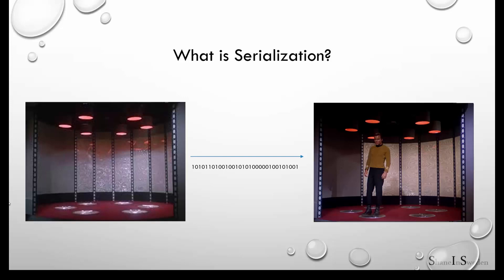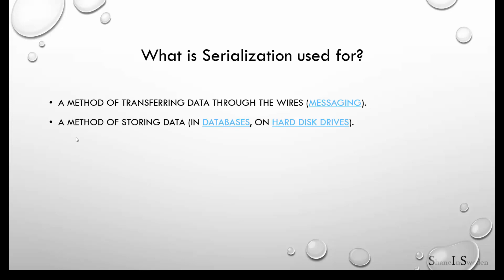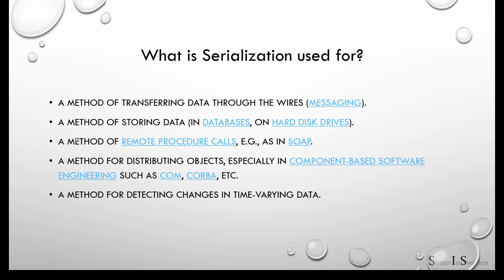As an alternative to serialization and deserialization, you'll hear people use the terms marshalling and unmarshalling — they mean the same thing. Serialization has quite a few uses: it can be used as a method for transferring data over the wire as a form of messaging, for storing data into a database or hard drive for persistence, for remote procedure calls, and for distributing objects. It's also an effective method for detecting changes in data when combined with hashing.